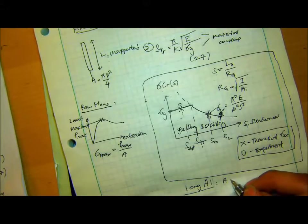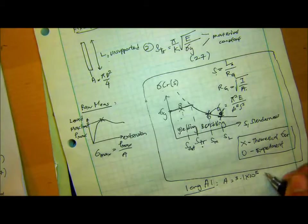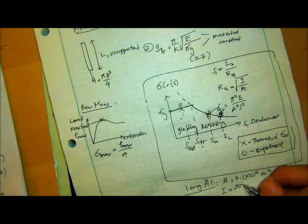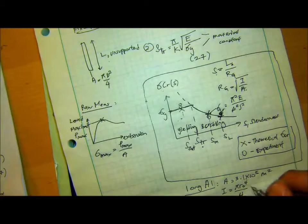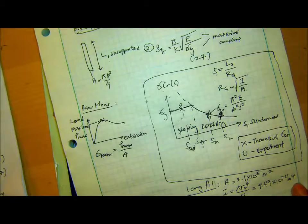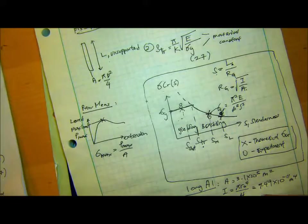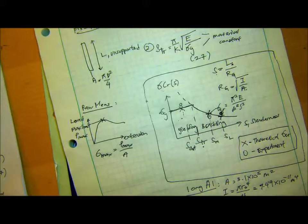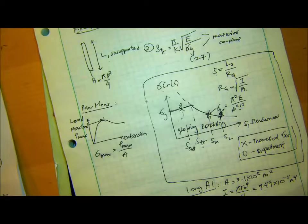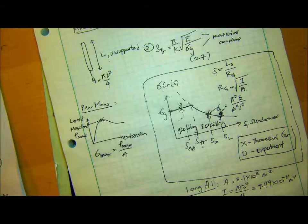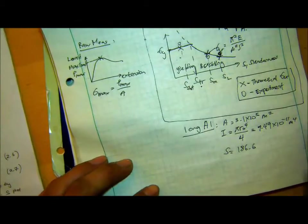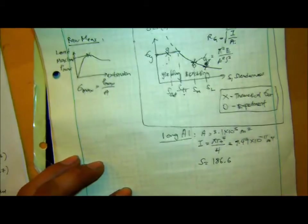So the area is 3.1 times 10 to the power of -5. I is just pi r0 to the 4 over 4. That gives 7.49 times 10 to the power of negative 11 meter to the 4. And the S that I calculate for long aluminum that we use is 186.6. So it's a dimensionless value.